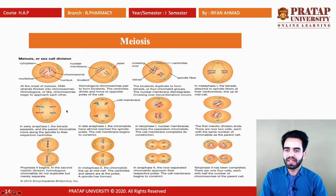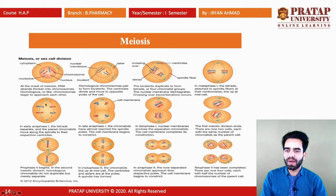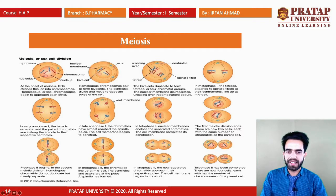In early anaphase I, the tetrads separate and the paired chromatids move along the spindle to their respective centrioles at opposite poles. In late anaphase I, the chromatids have almost reached the spindle poles and the cell membrane begins to constrict. In telophase I, the nuclear membrane encloses the separated chromatids and the cell membrane completes its constriction.